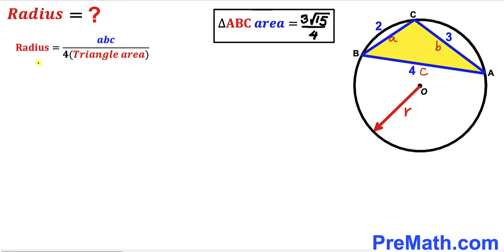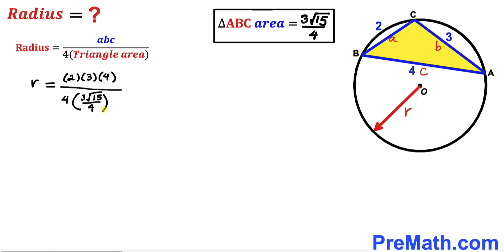Let's substitute all these values. So radius r equals 2 times 3 times 4 all over 4 times (3 times square root of 15 divided by 4). The 4 in the numerator of the denominator and the 4 cancel out, and likewise the 3 cancels with the 3. So r equals 2 times 4 divided by the square root of 15, which gives us 8 divided by the square root of 15.